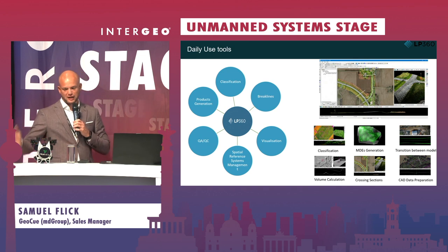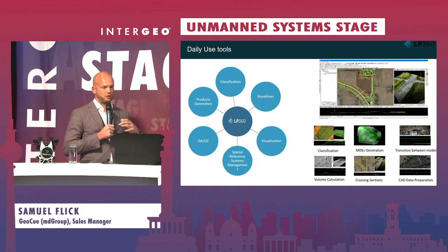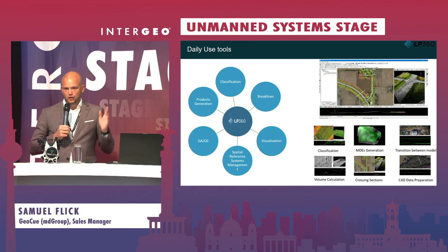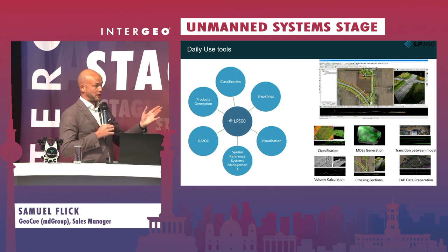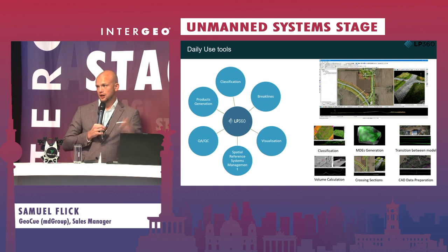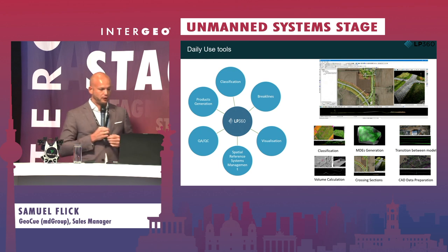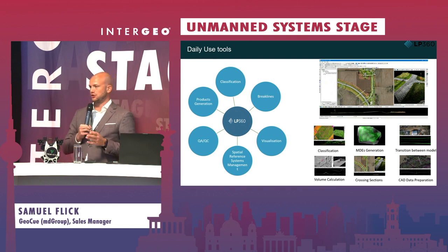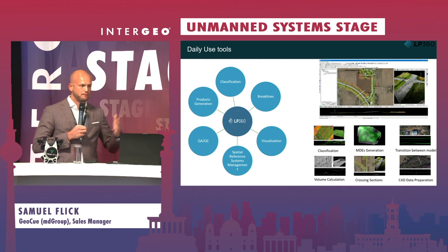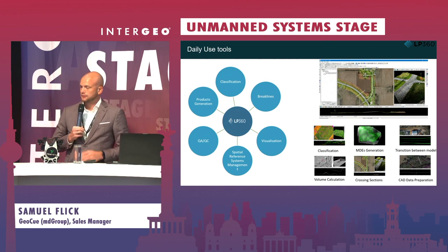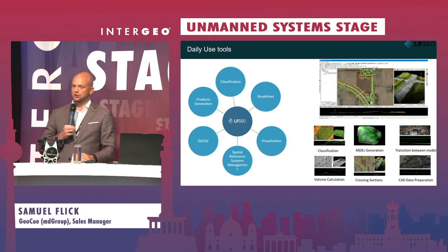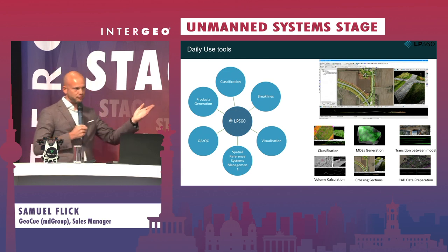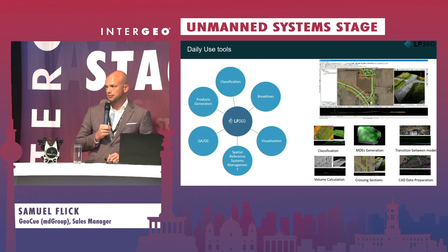We developed LP360 software — started 20 years ago — to process all raw data from the sensor, cameras, and APX into a LAS file. You can do strip adjustment, classification, smoothing, volume calculations, DTMs, contour lines, and much more. We can demo it at our booth. It's also open to other sensors — if you fly a DJI L1 and have misalignment issues or need to apply different EPSG codes, come to our booth and we can show you how we handle that.